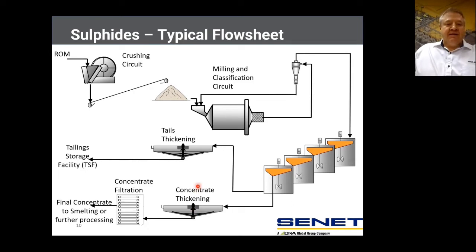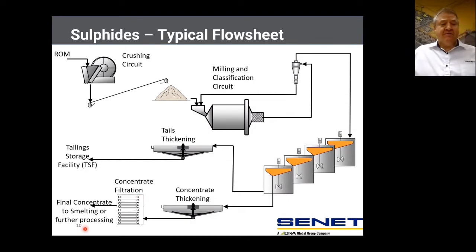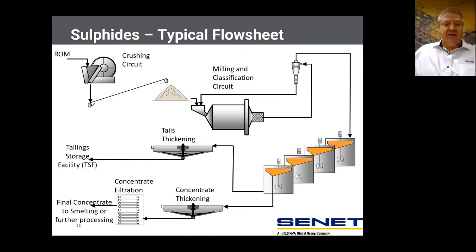The sulfides are crushed and then sent to a milling and classification circuit before being sent to the flotation circuit. The concentrate from the flotation is thickened and then sometimes filtered and sent to a smelter or a roaster for further processing. The tails is also thickened and then sent to a tailings storage facility.